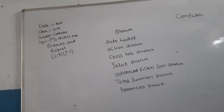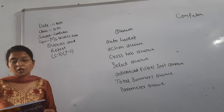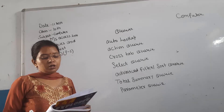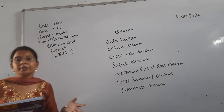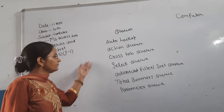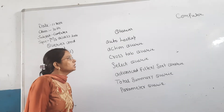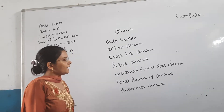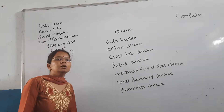You can use the query to get an answer to a simple question, perform calculations, and combine data from different tables. Queries can also be used for adding, modifying, or deleting from tables. The seven types of queries are: autolookup queries, action queries, crosstab queries, select queries, advanced filter, total summary, and parameter queries.